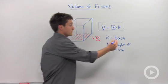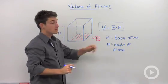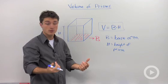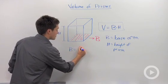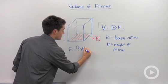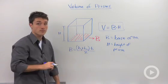So if this was a trapezoid, then you would substitute in B1 plus B2 times H all divided by 2, and that's how you would calculate your base area.